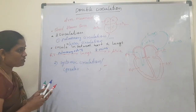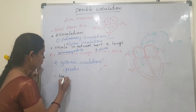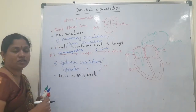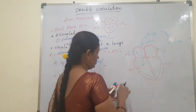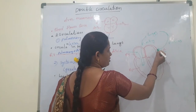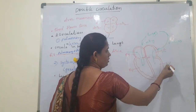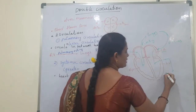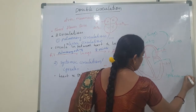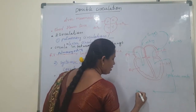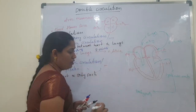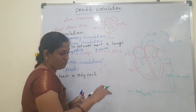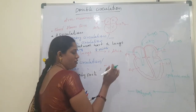Systemic circulation takes place between the heart and body parts. The oxygenated blood flows from the left atria to the left ventricle, and from the left ventricle it flows into the systemic arc, reaching the different body parts. In the body parts, exchange processes take place — oxygen diffuses into the tissue, and carbon dioxide diffuses into the blood.